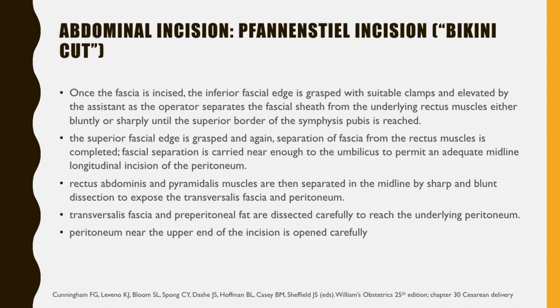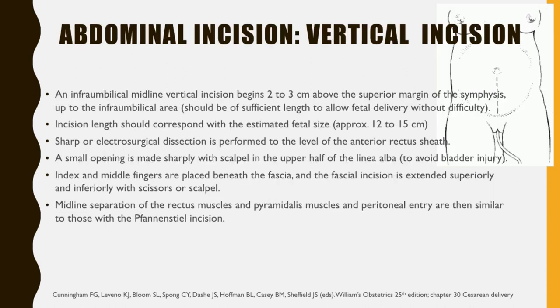For the vertical abdominal incision, an infraumbilical midline vertical incision begins 2–3 cm above the superior margin of the symphysis up to the infraumbilical area, of sufficient length — approximately 12–15 cm — to allow fetal delivery without difficulty. Sharp or electrosurgical dissection is performed to the level of the anterior rectus sheath. A small opening is made sharply in the upper half of the linea alba to avoid bladder injury. Index and middle fingers are placed beneath the fascia and the incision is extended superiorly and inferiorly. Midline separation of the rectus and pyramidal muscles and peritoneal entry are then similar to those with the Pfannenstiel incision.